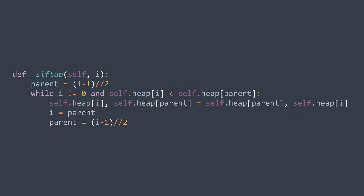In code, we want to sift up the element at index i. So we calculate the index of its parent as shown earlier. Then while it hasn't become the root or it is smaller than its parent, we swap node i with its parent, and i becomes the parent index because it took its place in the heap. We also recalculate the parent index for the next iteration. That's it.